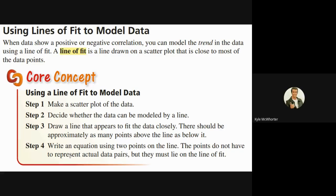Continuing with lesson 4.4, we are going to look at the big culminating type of problem where we actually make a line of fit for a scatter plot. When you're looking at a scatter plot that has a positive or a negative correlation, you can model the trend of the data using a line of fit. A line of fit is just any line that you draw on a scatter plot that's close to most of the points. There can be more than one line of fit you could draw.